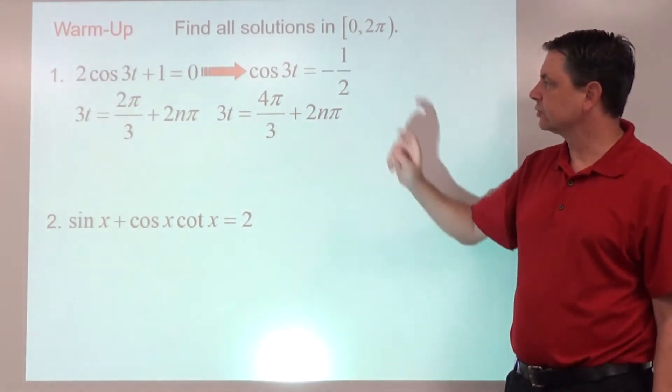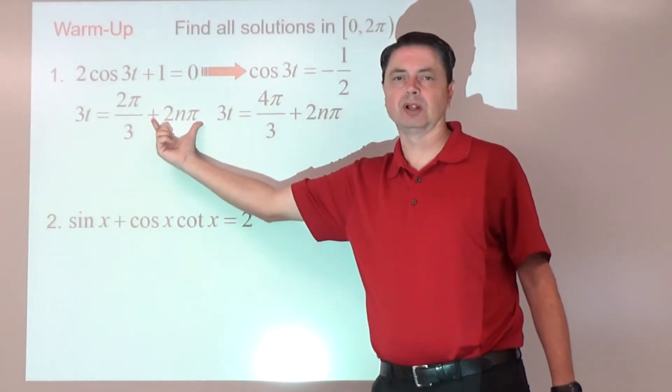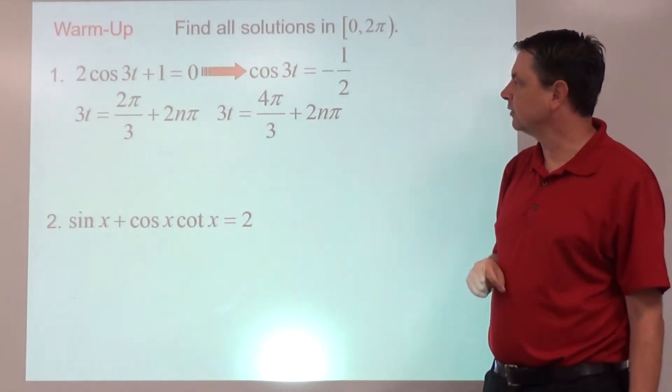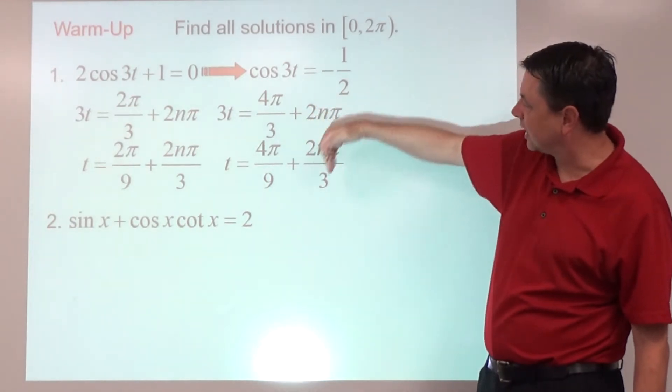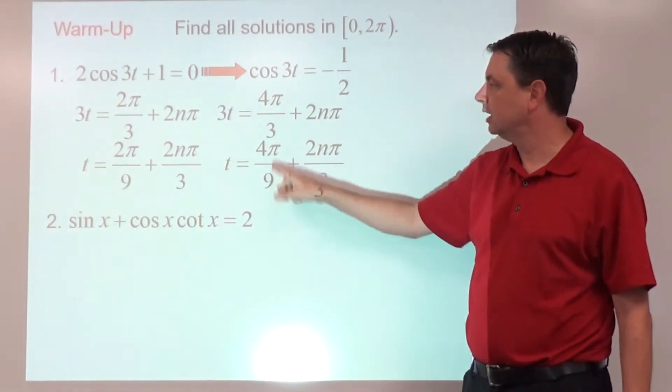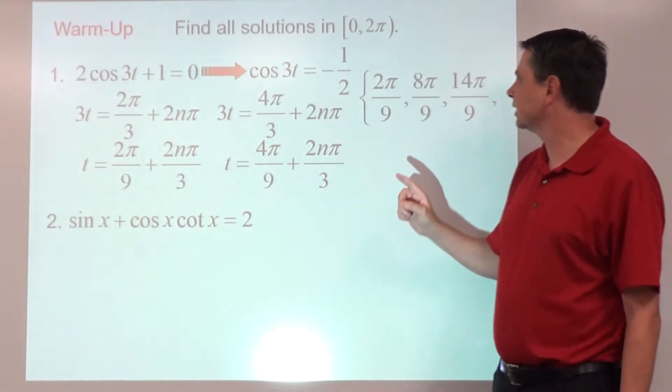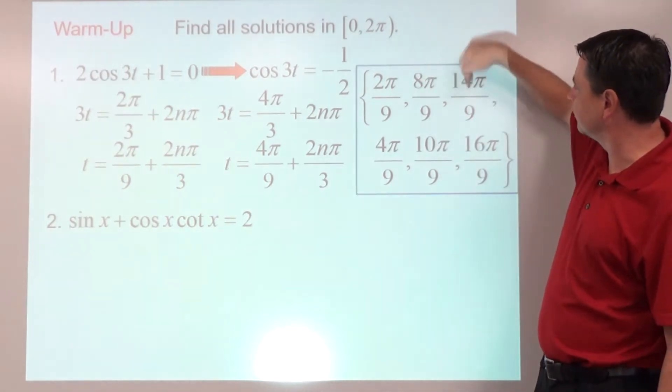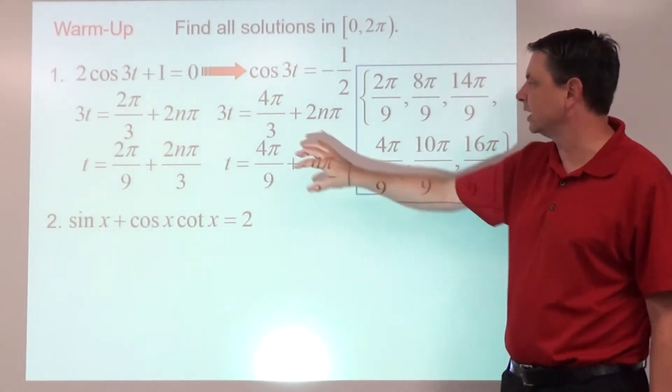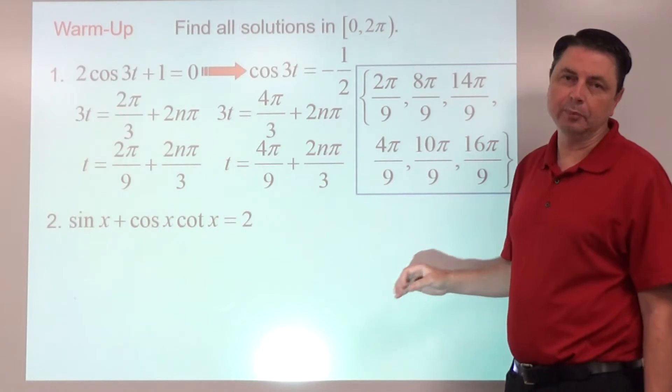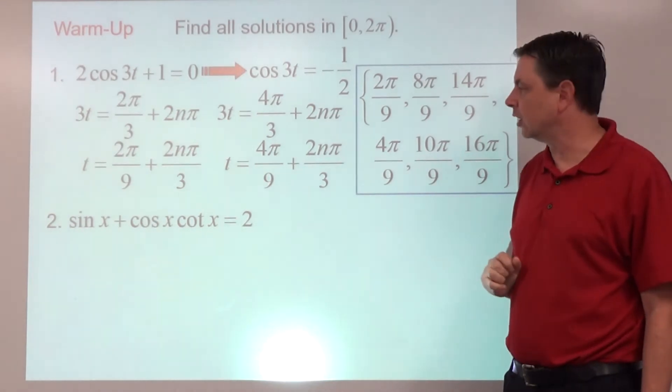So 3t equals—because it's a multiple angle problem we're going to do the plus 2nπ's. Divide everything by 3. It might be beneficial to have this be 6nπ over 9, because we are going to start plugging in values for n. Plugging in 0, 1, and 2 to get 2π over 9, 8π over 9, 14π over 9 coming from the first one, and then 4π over 9, 10π over 9, 16π over 9 coming from the second one.